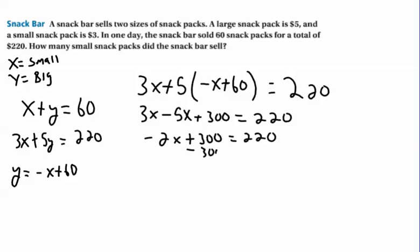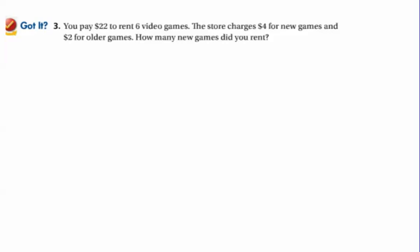Now I subtract 300. So I get negative 2X equals negative 80, and then I divide by negative 2. So X is 40. So I can take this 40 and I can plug it in. Well, how many more snack packs do I need to make 60? That would be Y is 60. So to answer the question, it said, how many small snack packs? Well, we sold 40 small snack packs and 60 large snack packs. So when you're working on your Got It, you pay $22 to rent 6 video games. The store charges $4 for new video games and $2 for older video games. You should probably let X be new games and Y be old games, and then you can probably take it from there. So I don't think you have too many problems with this. I'll see you soon, and may the force be with you.